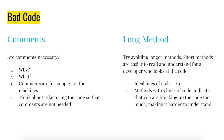Next is long method — try avoiding longer methods in your code. Shorter methods are easy to read and understand for a developer who looks at the code. The ideal lines of code is 20 for a method. Methods with five lines of code indicate that you are breaking up the code too much, making it harder to understand.